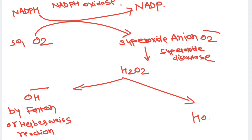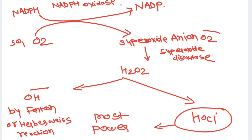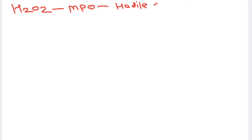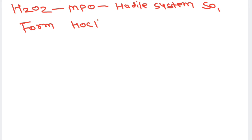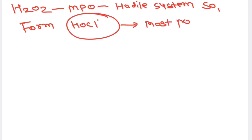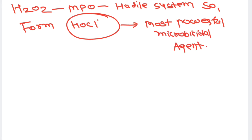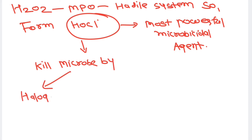Alternatively, hydrogen peroxide can be converted into hypochlorite (HOCl), which is a most powerful microbicidal agent. This conversion occurs due to the enzyme myeloperoxidase present in neutrophils, in the presence of chloride, bromide, or iodide. The H₂O₂–myeloperoxidase–halide system produces HOCl, which kills microbes very effectively.